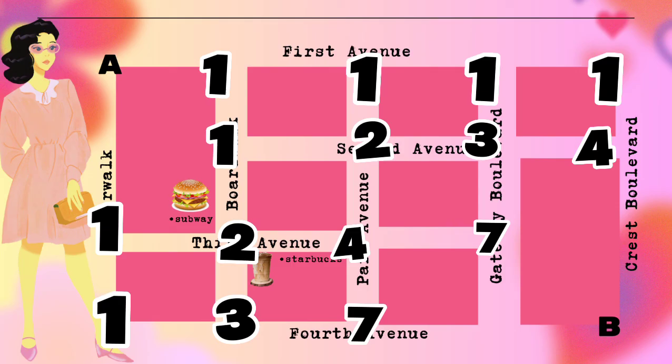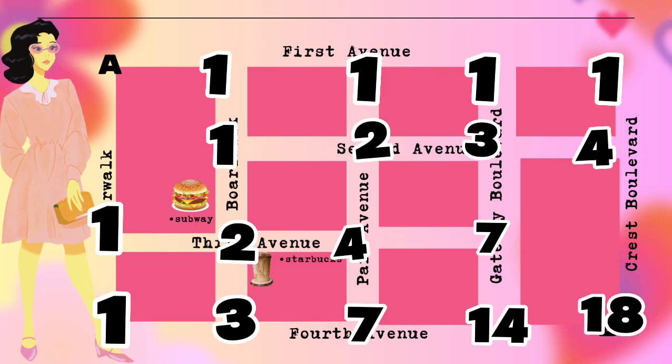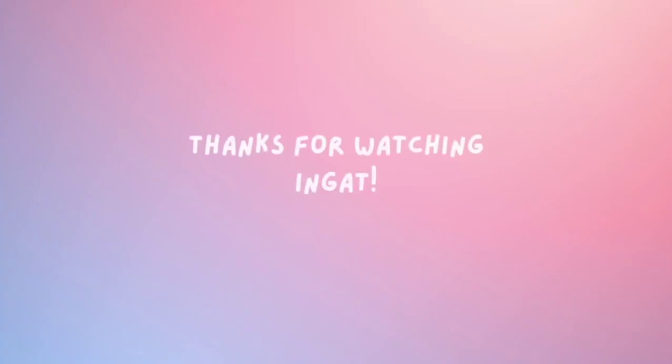Second to last: seven plus seven equals 14. And for the last step, we add the number four at the top and the number 14 at the bottom: 14 plus 4 equals 18. So 18 is the total number of routes that Anna can take from point A to point B.